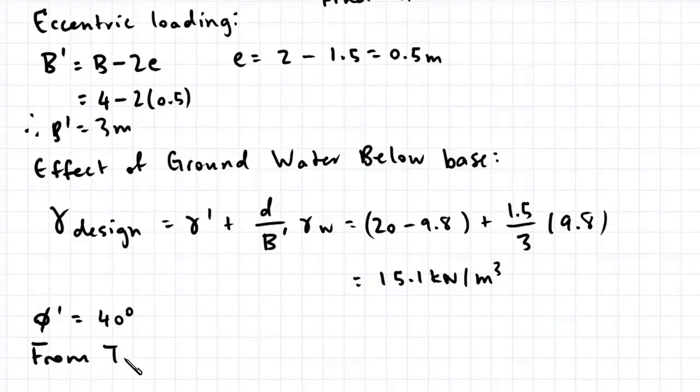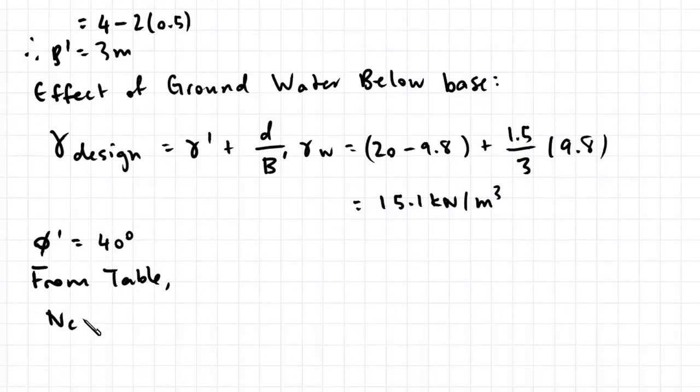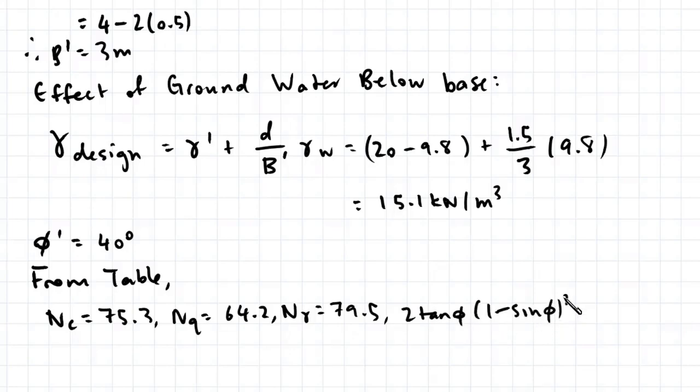So from the table, Nc is equal to 75.3, Nq is equal to 64.2, Ngamma that's 79.5, and the final expression 2 tan phi 1 minus sin phi squared, that's 0.21.